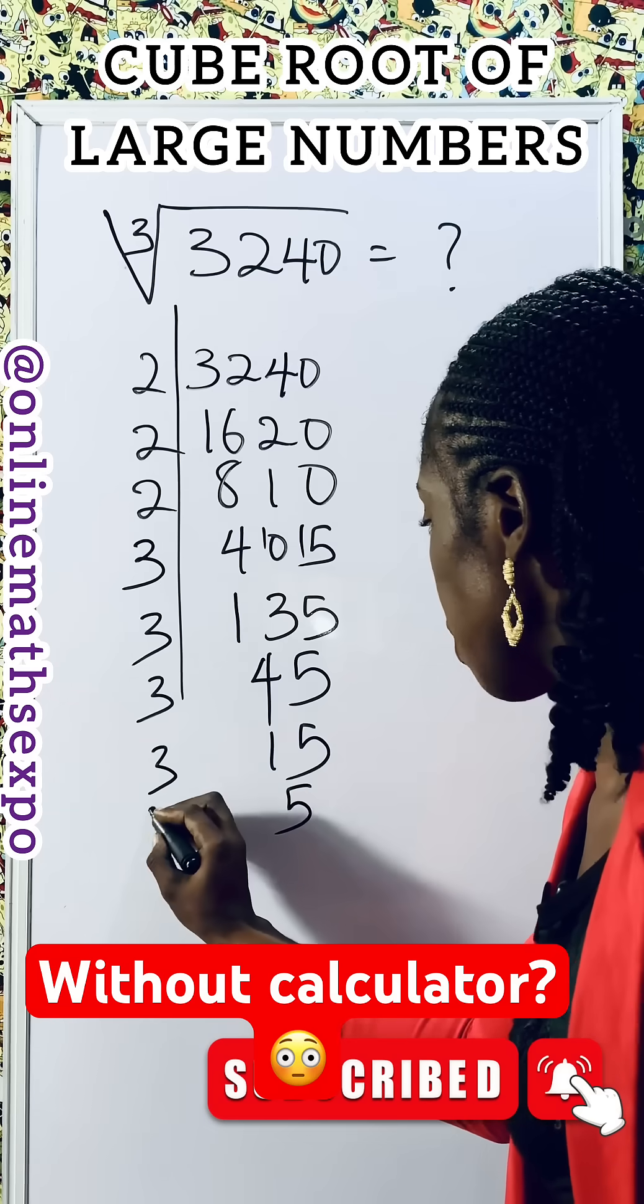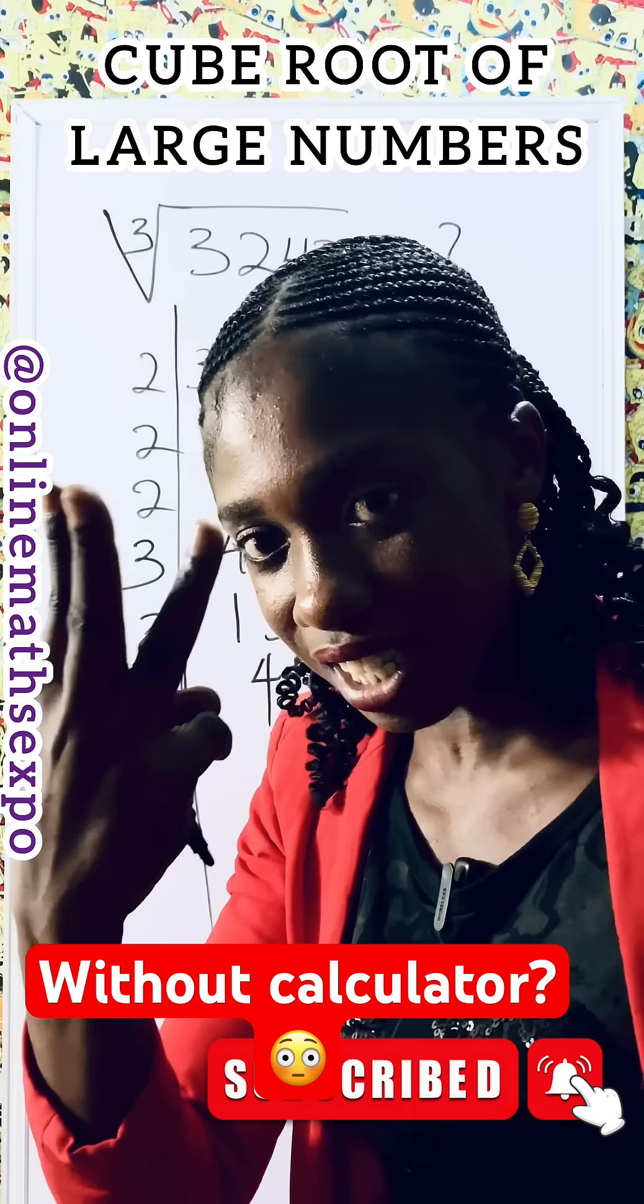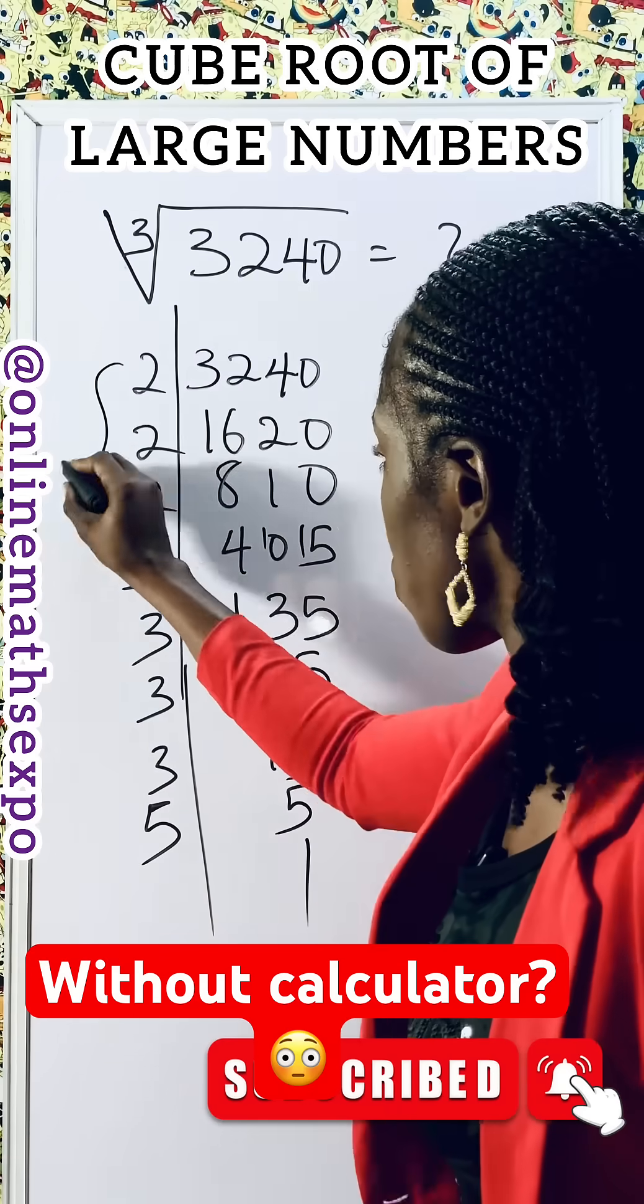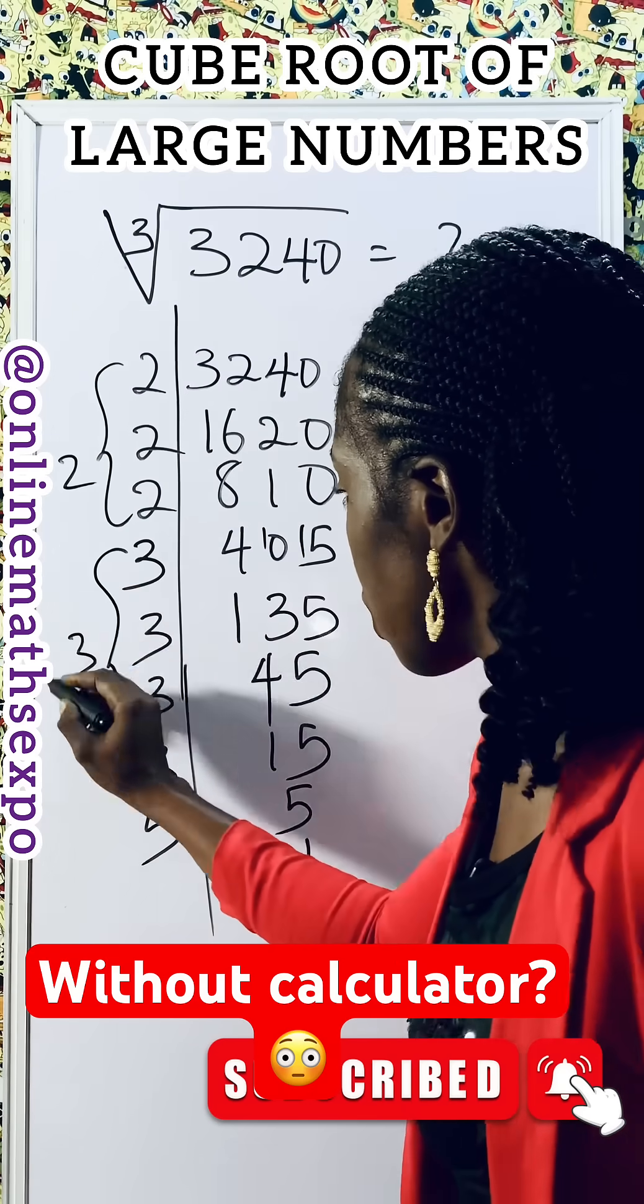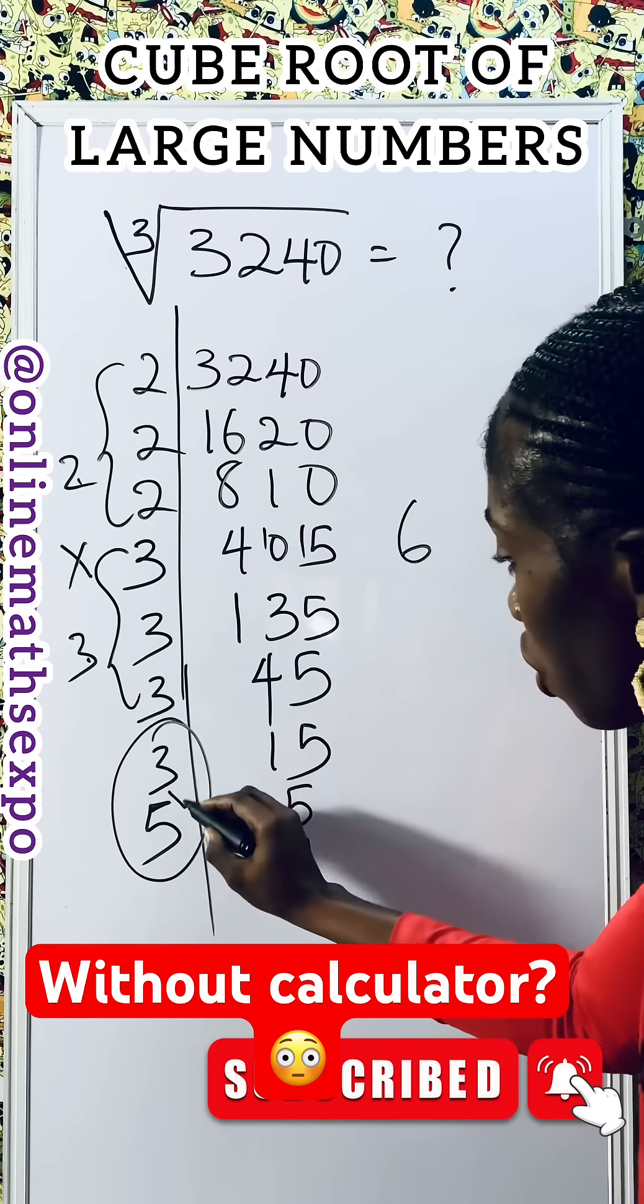Now, because it's cube root, you group the factors in threes. Group these factors - take one group here, take one group there. When you multiply the factors outside, it gives you six, and what remains stays inside the root.